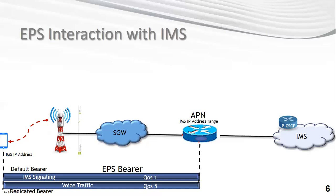Getting back to VoLTE: the first thing this person does is perform signaling or call setup procedures, and after finishing signaling, they start sending traffic. To do signaling in VoLTE, you need to create a default bearer with the IMS APN to connect with the IMS network. If the person wants internet access for browsing or downloading, they initiate a default bearer with the internet APN. There are many APN types, but the IMS APN and internet APN are the important ones here.